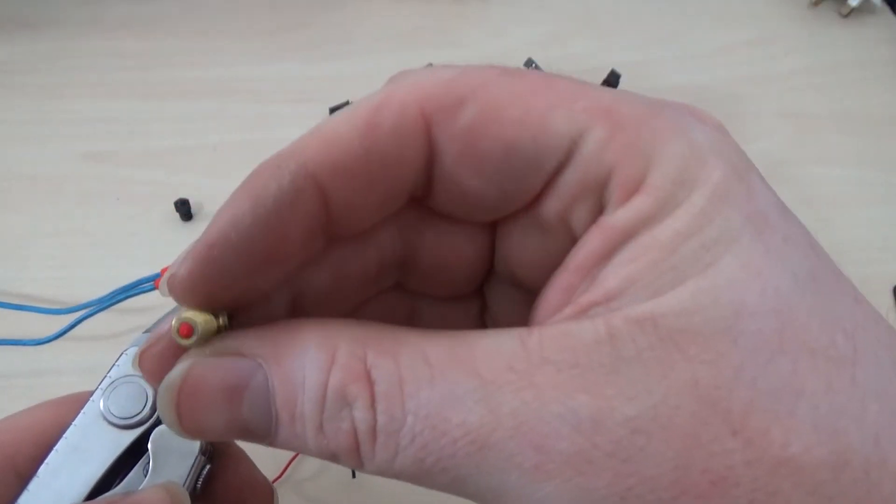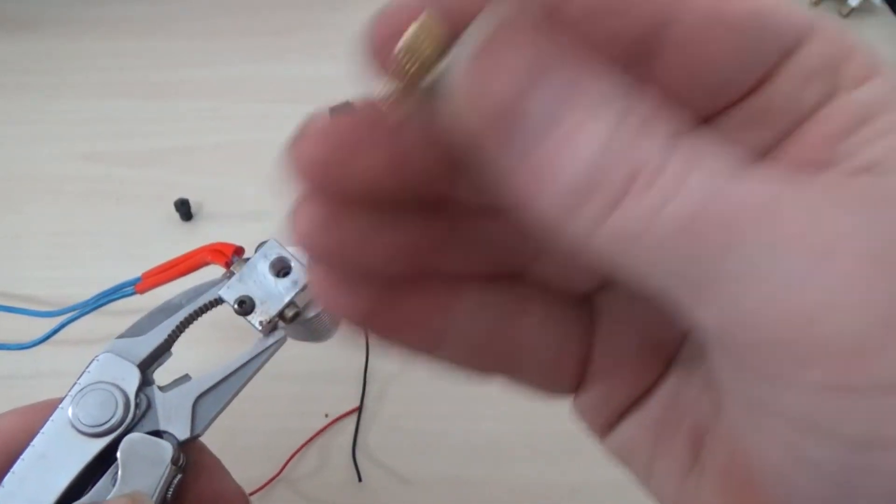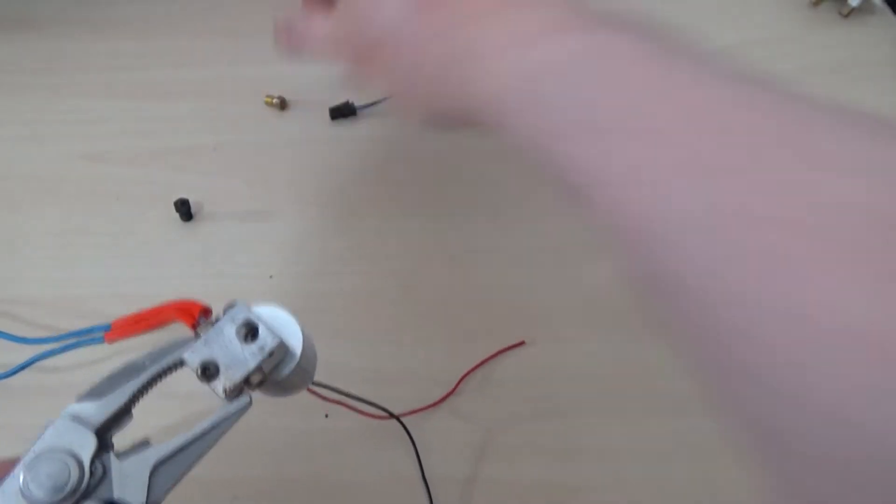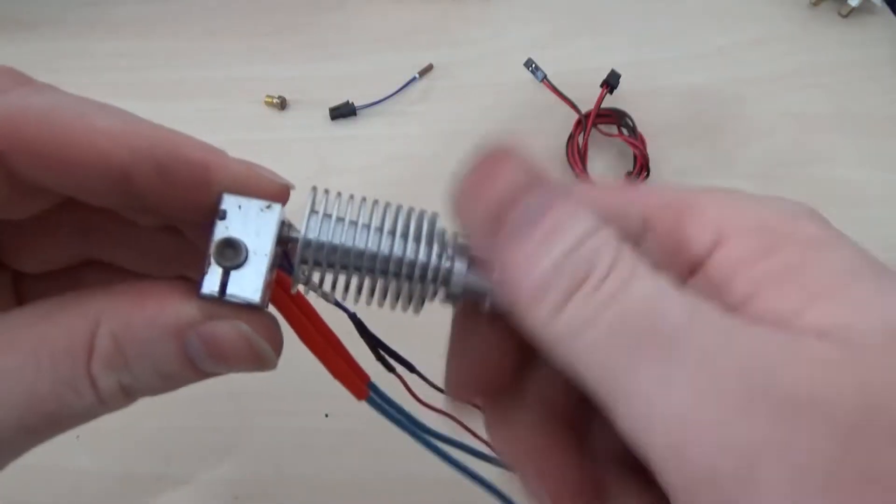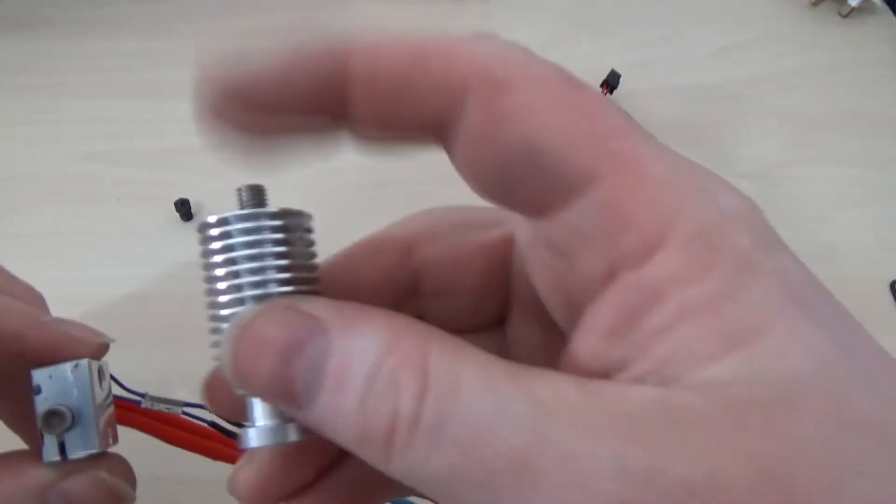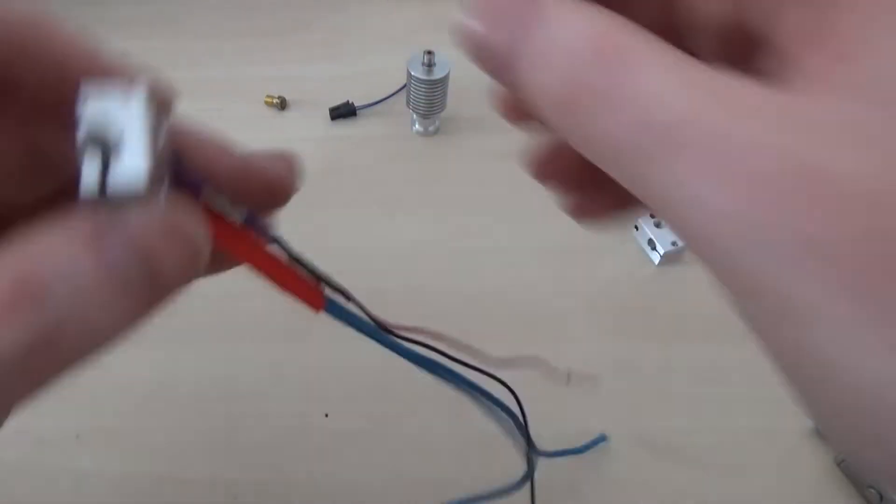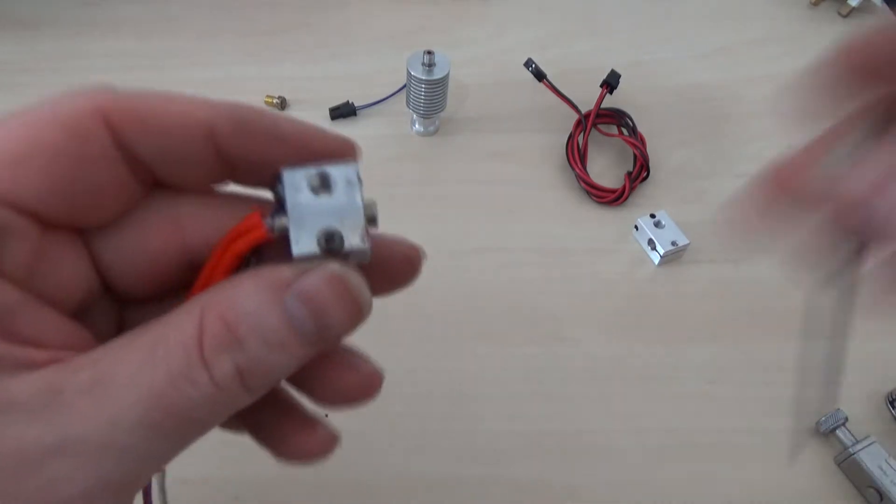Now mine has filament left in it, it's got red HIPS in it but that will purge out when you reassemble. It's not a big deal for me because I'm going to change it out anyway. And then unscrew the heat sink, it comes out with the heat break already attached. If it doesn't, don't worry about it, just unscrew that as well.